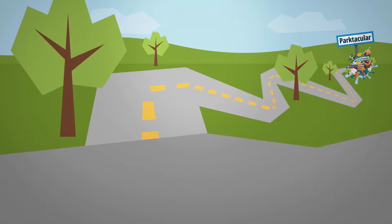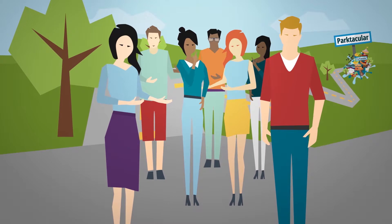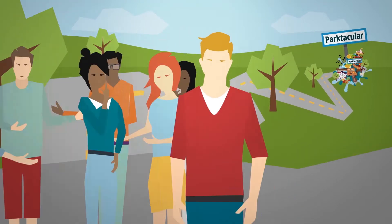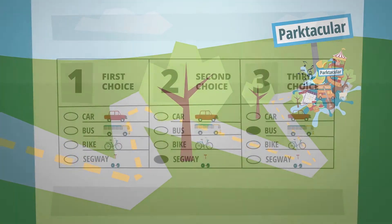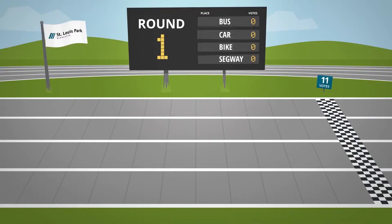What happens if I skip a ranking? Let's look at an example. Remember, Sophia's friends are trying to decide how to get to Parktacular. Let's say one friend doesn't have a favorite candidate, so they leave their first choice blank, but fill in a second choice for Segway and third choice for Bus.